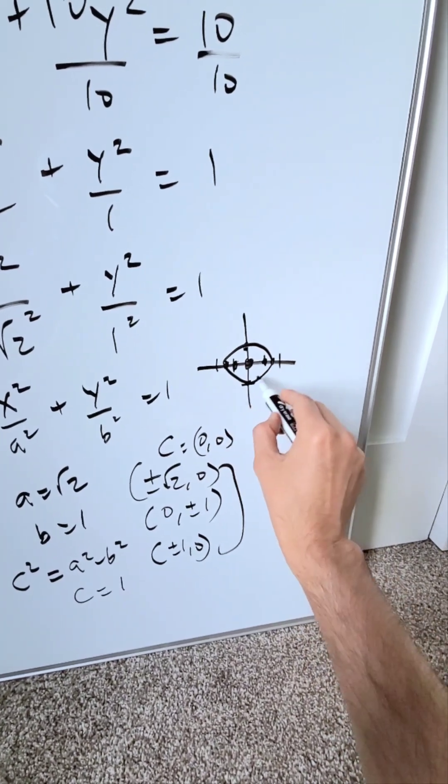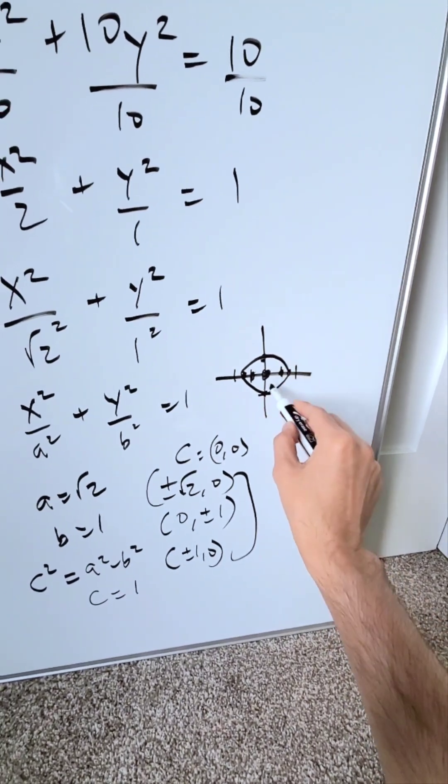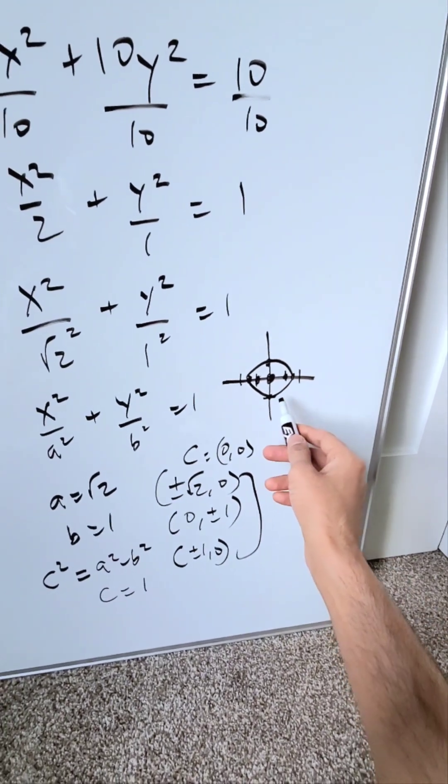Here's your vertex. Here's your vertex. Here's your minor axis endpoint. Here's your other minor axis endpoint and your center. This right here represents our ellipse.